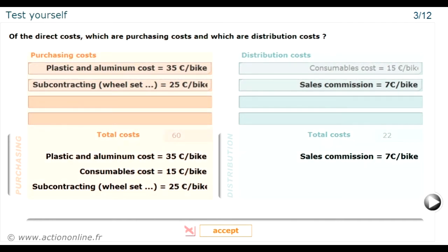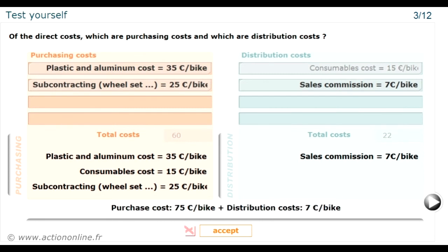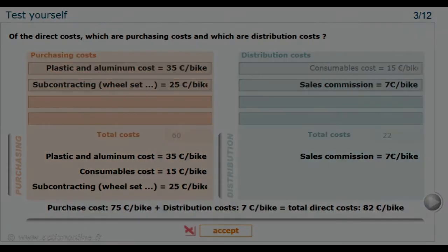Plastics, consumables and subcontracted items are bought-in products. Their costs are therefore purchasing costs. Commission for the sales representatives responsible for distributing the new bike is a sales cost. We therefore have 75 euros of purchasing costs and 7 euros of sales costs. The total of the direct costs for manufacturing the women's town bike therefore comes to 82 euros.